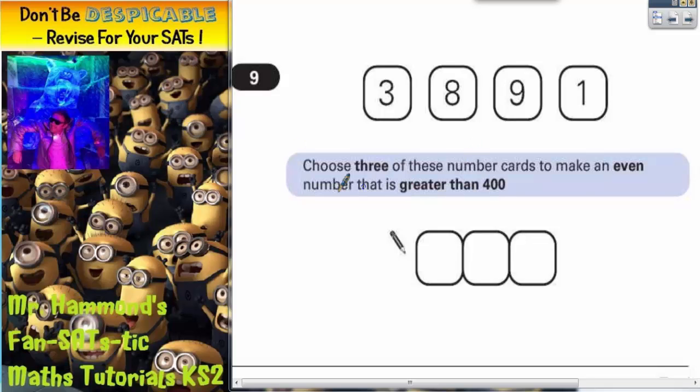Question 9. Choose three of these number cards to make an even number that is greater than 400.